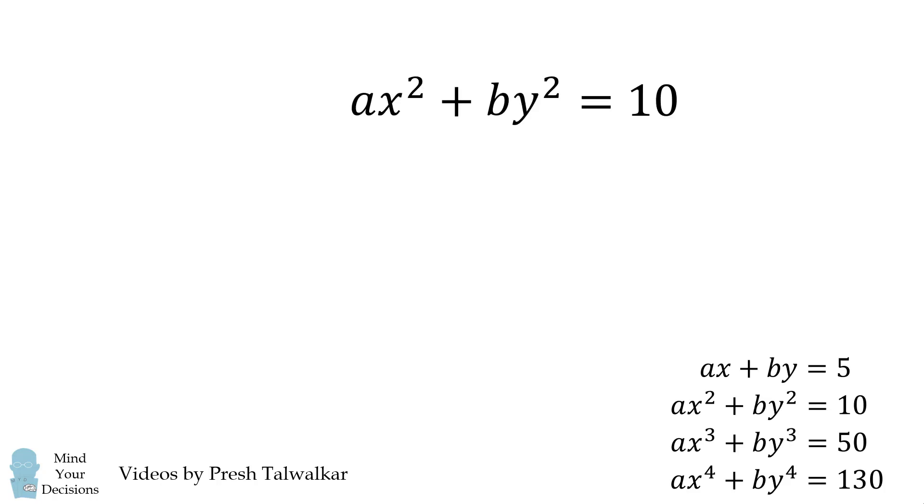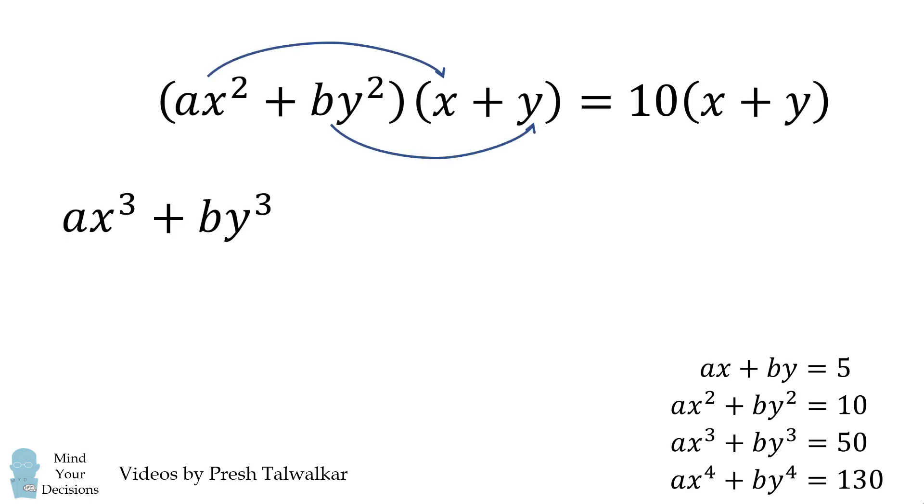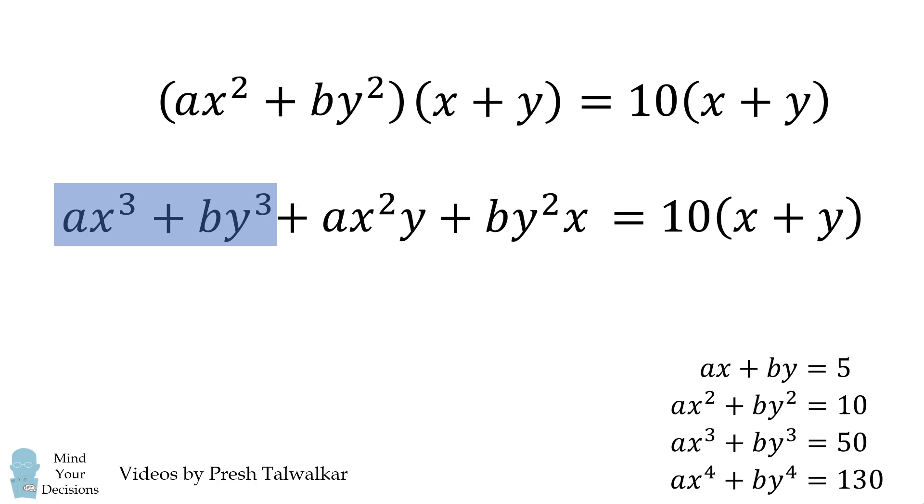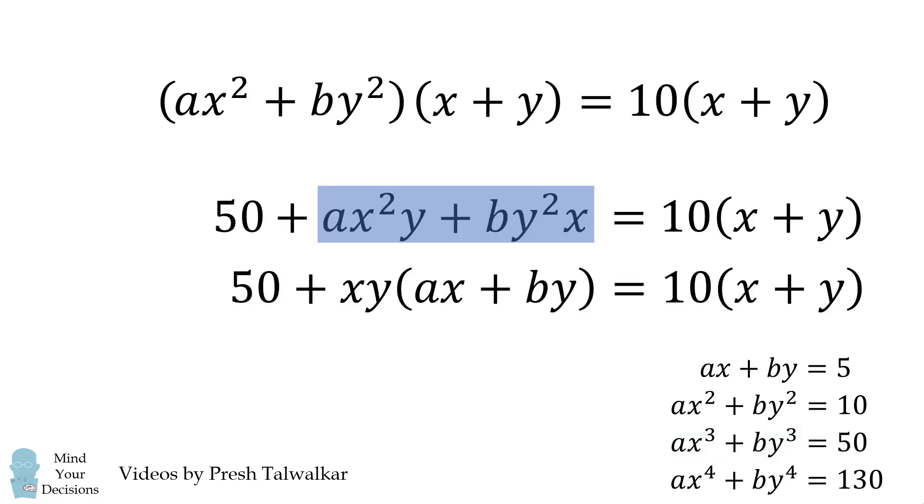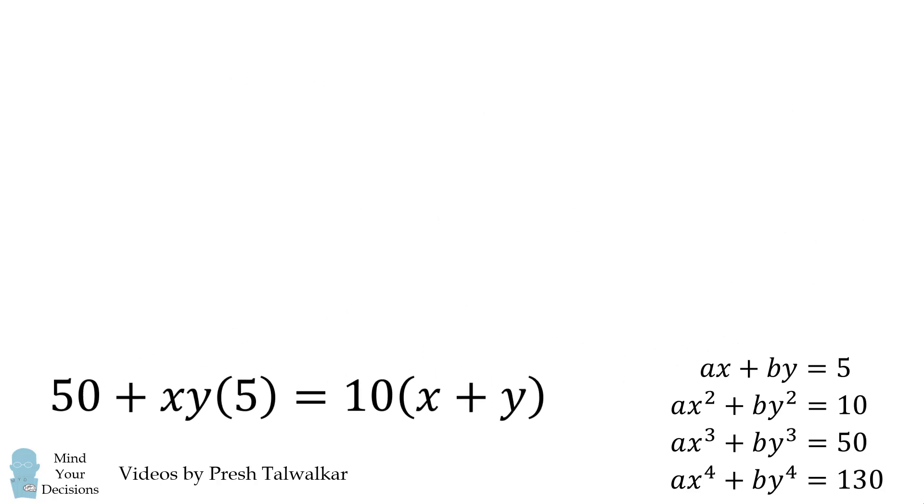We'll start with the second-degree equation. We'll multiply both sides by the quantity x plus y. We'll then distribute the left-hand side. We're going to get another equation. We can now simplify this equation. Notice we have ax cubed plus by cubed, and that's equal to 50. We substitute that. For the remaining two terms, we factor out xy and we're left with a factor of ax plus by. But this is interesting because we know that's equal to 5, so we'll substitute that in. We'll now take this entire equation and put it to the side.